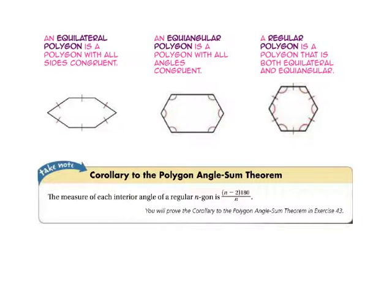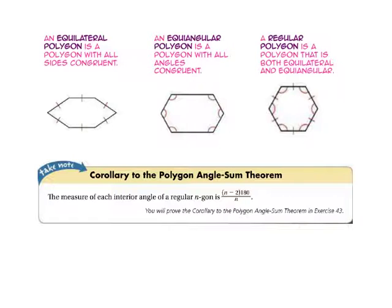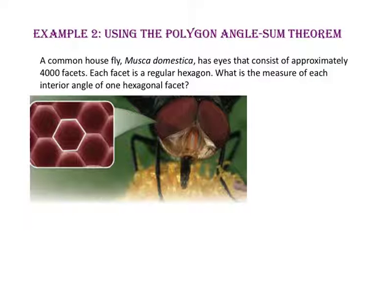An equilateral polygon is a polygon with all sides that are congruent — notice the congruent marks on each side of this hexagon. An equiangular polygon is a polygon with all angles that are congruent — notice the congruent arcs in each angle of this hexagon. A regular polygon is both equilateral and equiangular. The corollary to the polygon angle sum theorem helps us find the measure of one interior angle of a regular polygon: take the sum of the interior angles and divide by the number of sides.